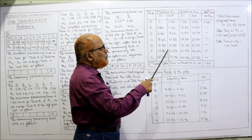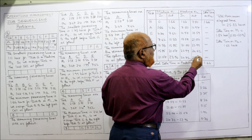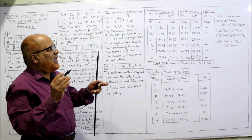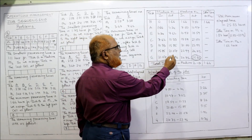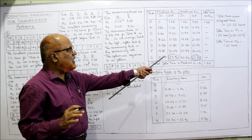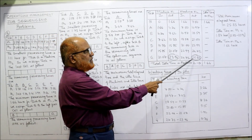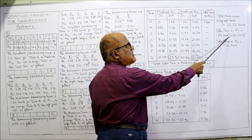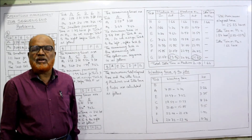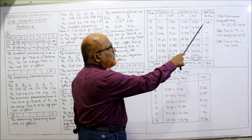The total elapsed time is 25.83, but M1 completed its last job at 23.96. The difference is 25.83 − 23.96 = 1.87 hours. So the idle time for M1 is 1.87 hours.